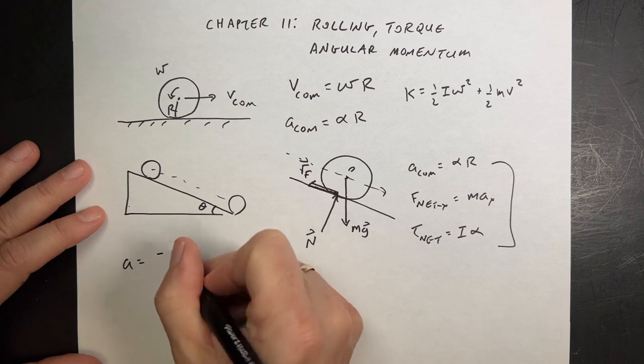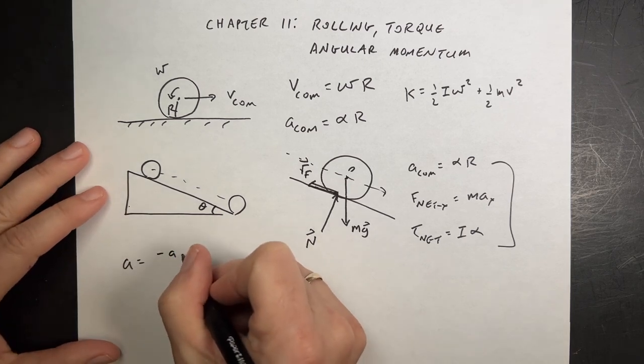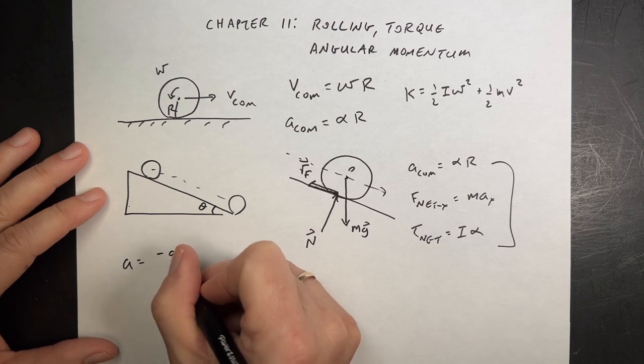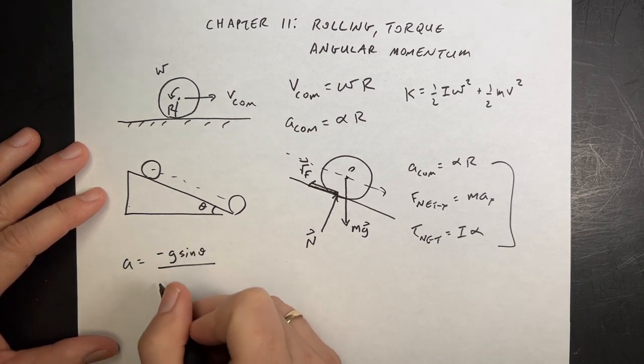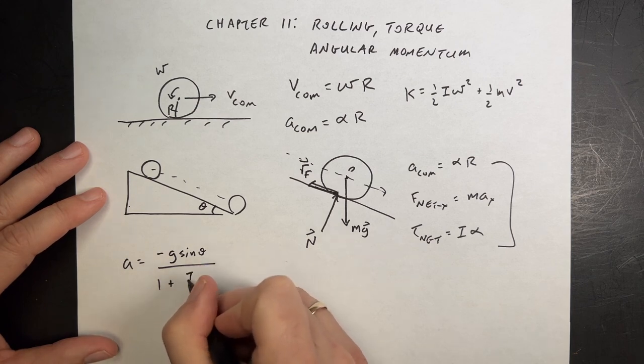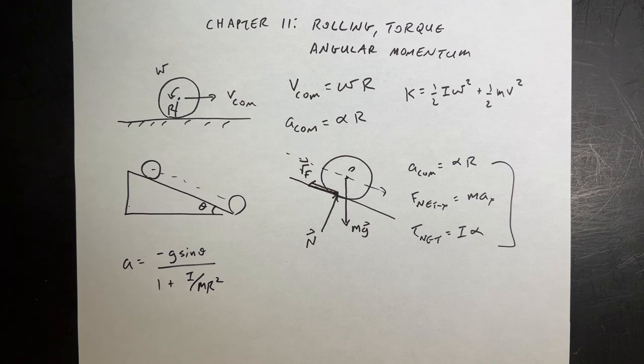And you get this from the book. A equals, they put a negative because it's going accelerations that way, I guess. It's negative g sine theta, where that's the angle of the incline, divided by one plus i over m r squared. So again, it's not something that would be like, I think you should include in the summary, since it's the result of a particular calculation. But it is kind of fun.